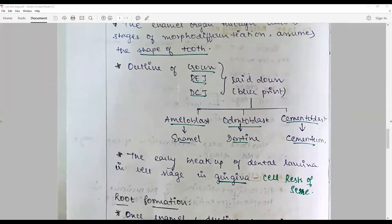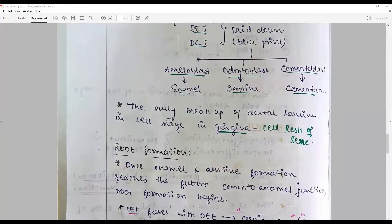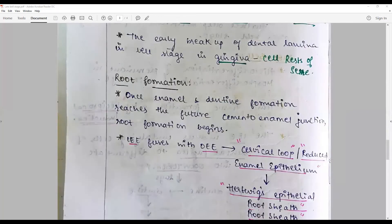The early breakdown of dental lamina in the bell stage in the gingiva we call it as the are later give rise to the cell rest of Serres. The root formation: once the enamel and dentine formation reaches the future cemento-enamel junction, the process of root formation begins here.